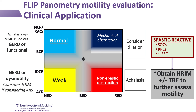Next, the weak planometry pattern could reflect susceptibility to GERD and may be associated with esophageal hypomotility. Achalasia is likely ruled out with normal EGJ opening, but further evaluation of primary peristalsis may be warranted — particularly if anti-reflux surgery is being considered.